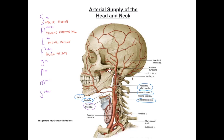Next is the occipital artery, which arises from the external carotid artery and runs around the posterior aspect of the skull, helping to form part of the rich anastomosis of vessels supplying blood to the scalp. Another artery that also arises from the external carotid and runs posteriorly behind the ear to supply the skin of the scalp is the posterior auricular artery.